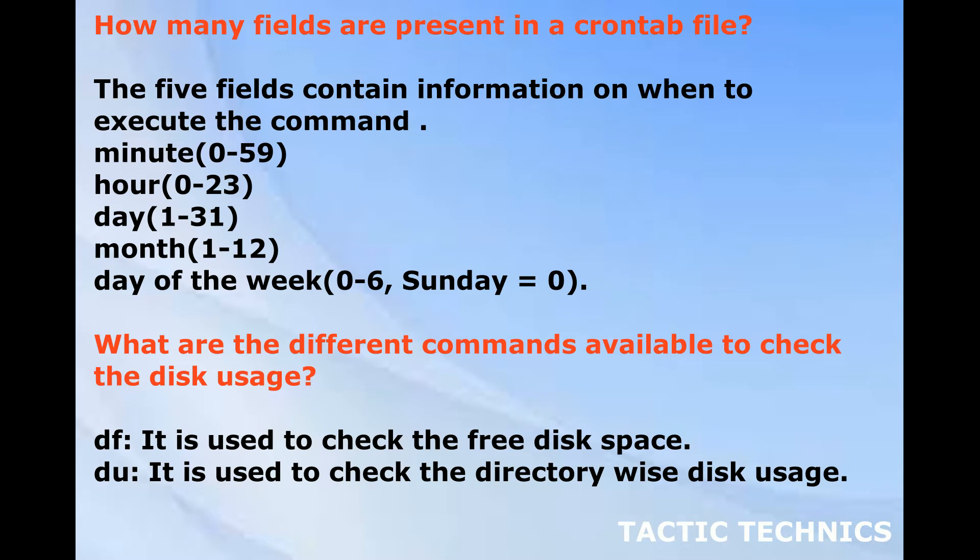How many fields are present in a crontab file? The five fields contain information on when to execute the command: minute (0 to 59), hour (0 to 23), day (1 to 31), month (1 to 12), day of the week (0 to 6), where Sunday equals 0.